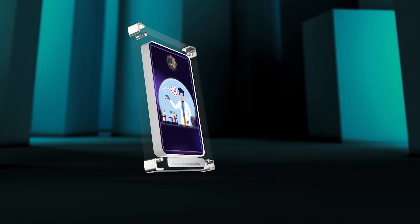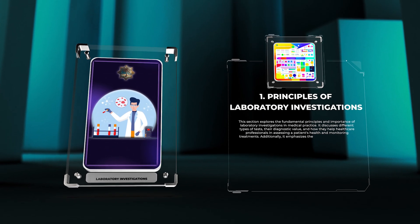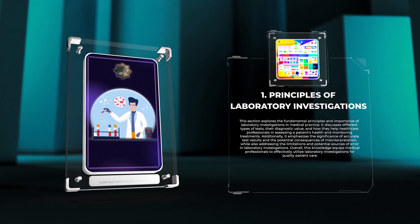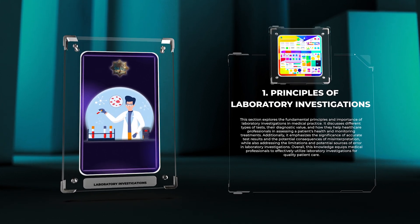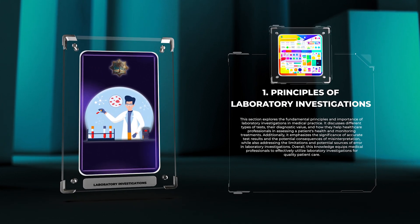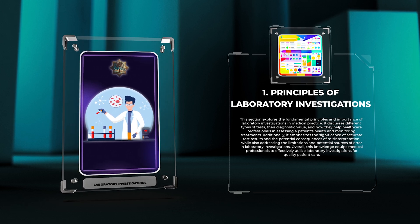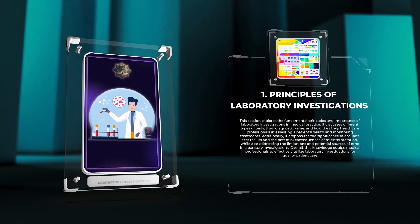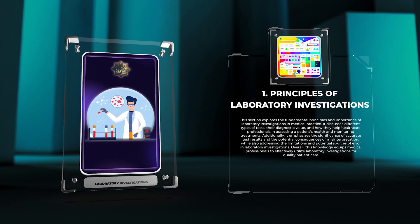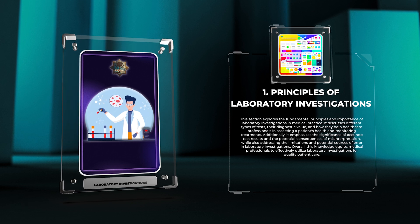This section explores the fundamental principles and importance of laboratory investigations in medical practice. It discusses different types of tests, their diagnostic value, and how they help healthcare professionals in assessing a patient's health and monitoring treatments. It emphasizes the significance of accurate test results and the potential consequences of misinterpretation, while also addressing the limitations and potential sources of error in laboratory investigations.